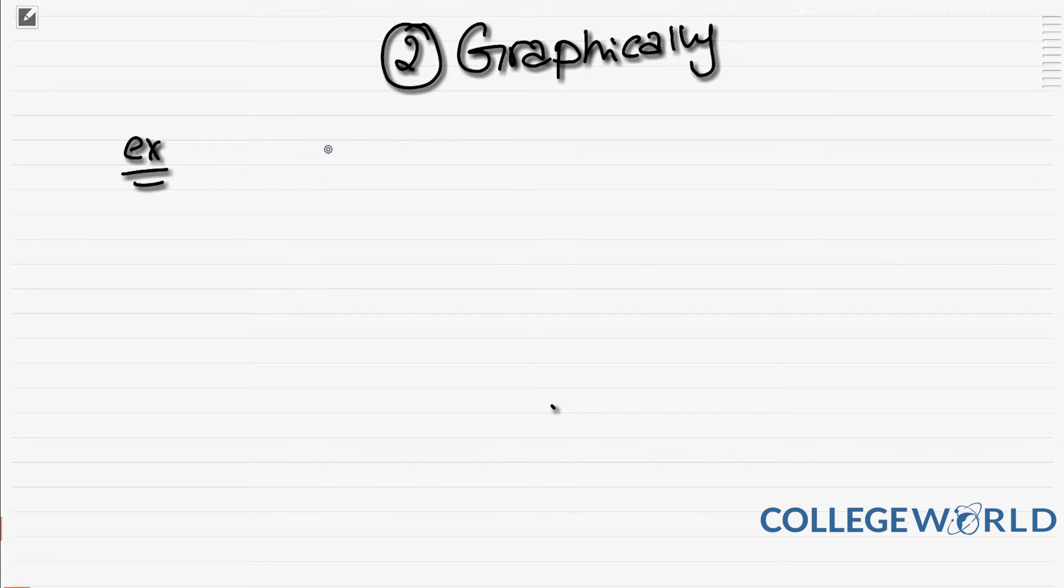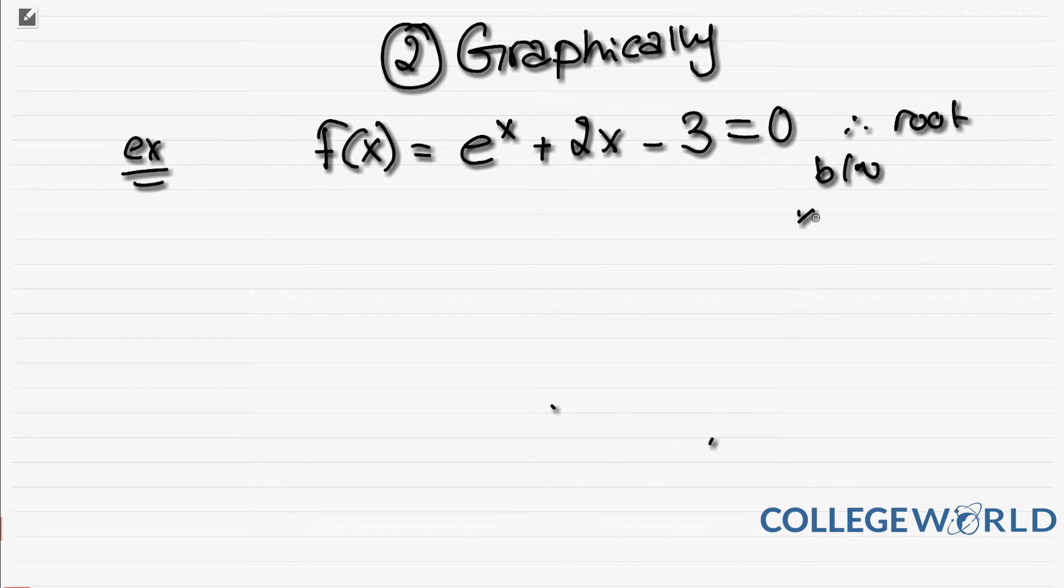Let's explain the graphical method. In general, if you find an interval in which f(x) changes sign, then that interval must contain a root. The questions will come like this: show that the function e^x + 2x - 3 has a root between x = 0.5 and x = 0.6.